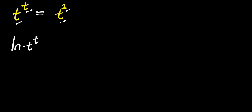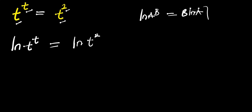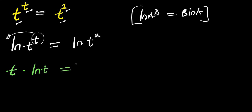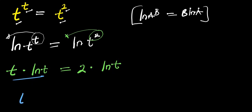We take ln of t^t and this equals ln of t^2. Now if you have ln of a^b, this equals b times ln of a. So the t here will come in front of the ln — that means we have t times ln t equals two times ln t.